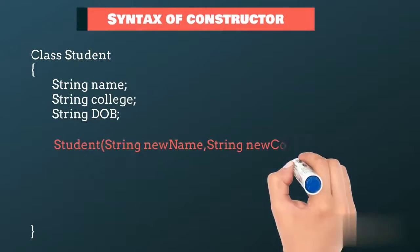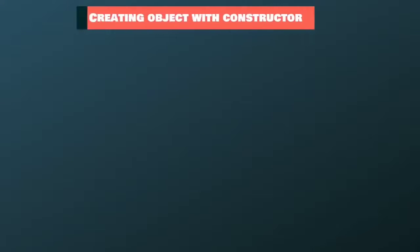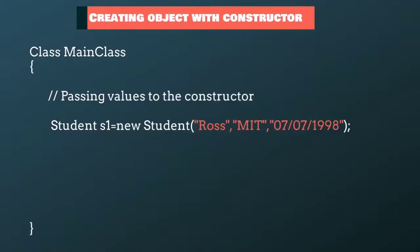We will pass three parameters to our constructor and set its value to the variable of a class. When we create a new object of a student class in our main method, then we have to pass these values as a parameter to the constructor.